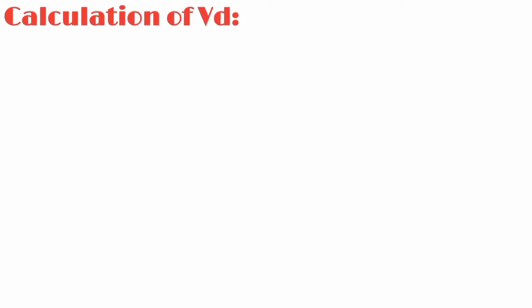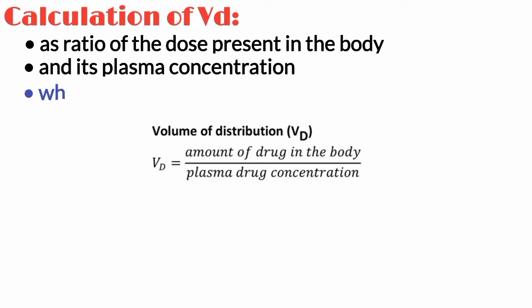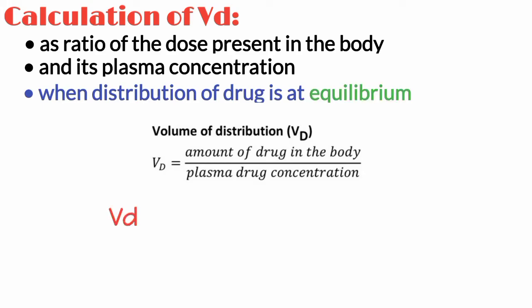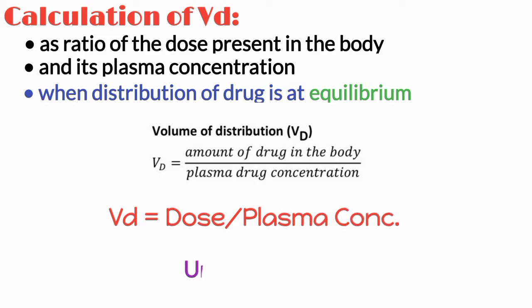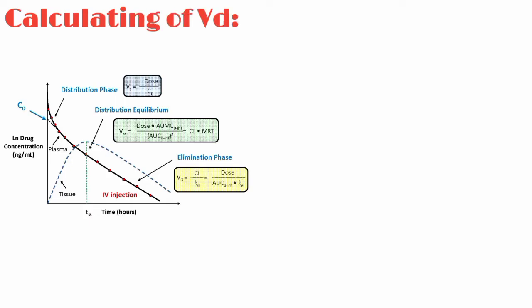Let us now see how the volume of distribution is calculated. VD is calculated as the ratio of the dose present in the body and its plasma concentration. When the distribution of the drug between the tissues and the plasma is at equilibrium, VD is equal to dose over plasma concentration. It can be expressed as liters or indexed to body mass in liters per kg. Plasma concentration can be observed at different times, giving rise to several different possible strategies of calculating the volume of distribution.